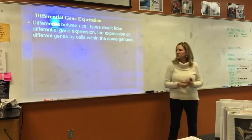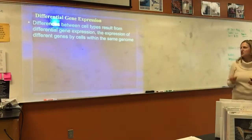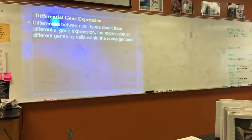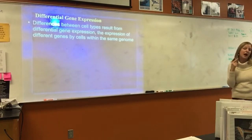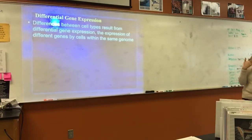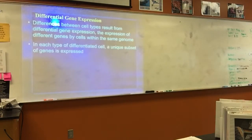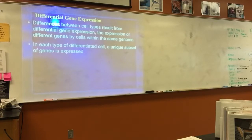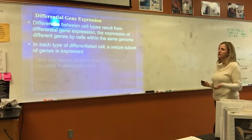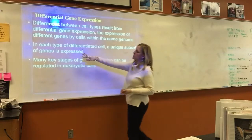Differences between cell types result from differential gene expression — by definition, the expression of different genes by cells with the same genome. We're going to look at specifically a liver cell and a cell from the lens of your eye, and why liver cells make certain proteins and lens cells make certain proteins, but they're different proteins even though they have the same genome. Each type of differentiated cell has a unique subset of genes that are expressed — all cells have the same genes, but only certain ones are actually turned on and expressed to make proteins.